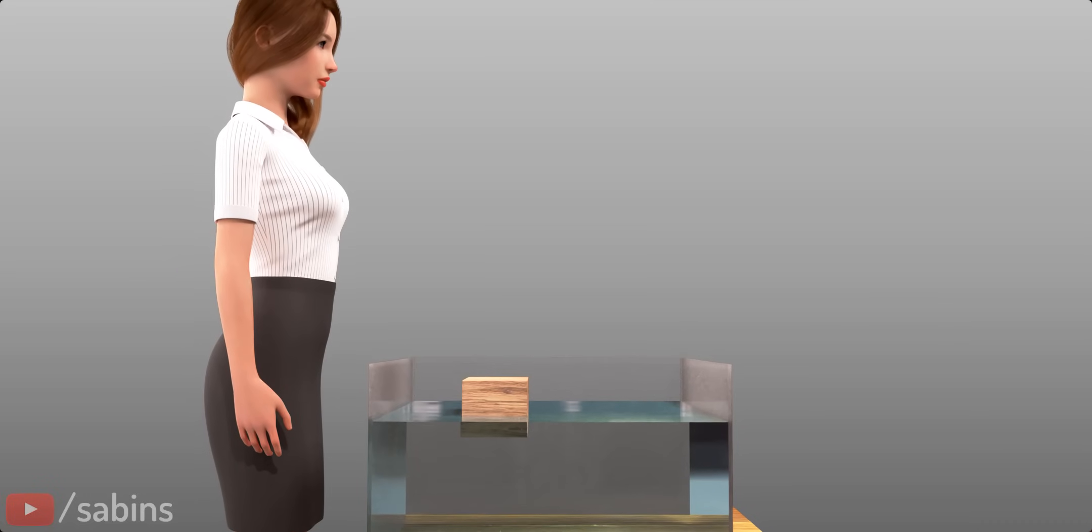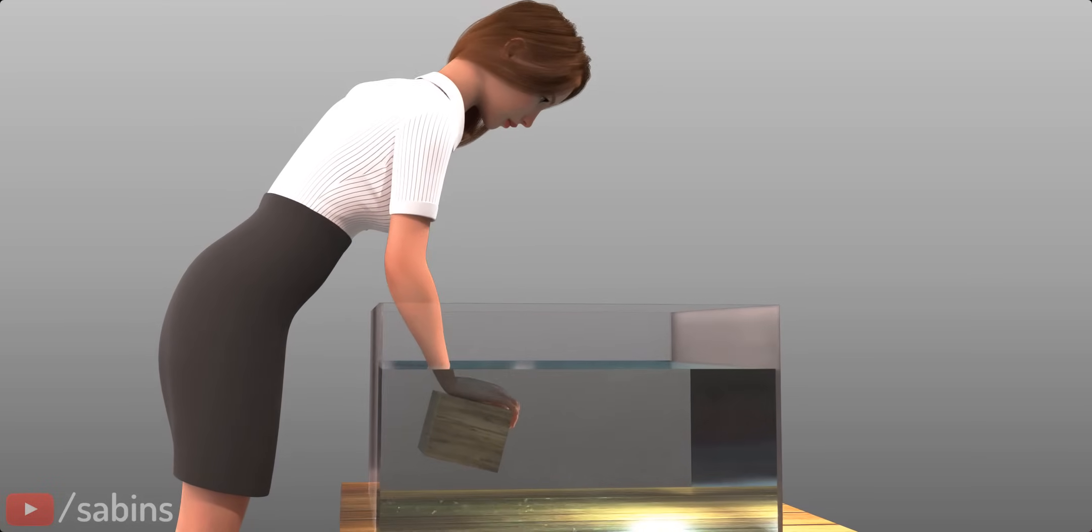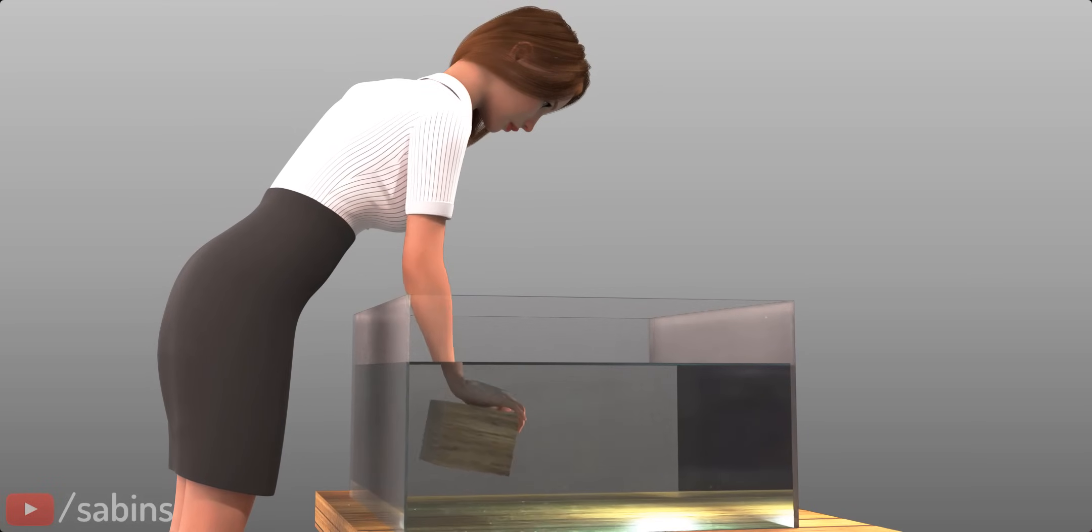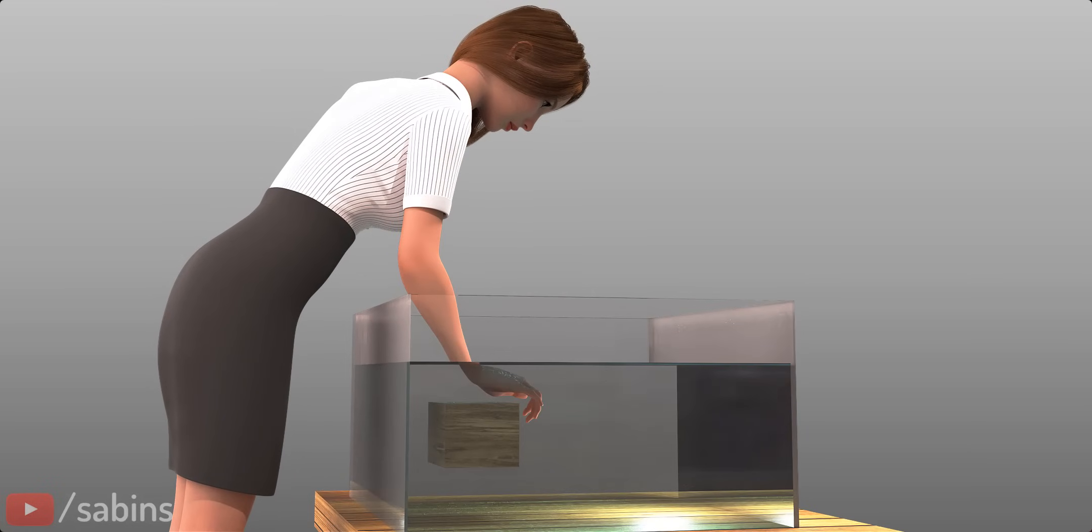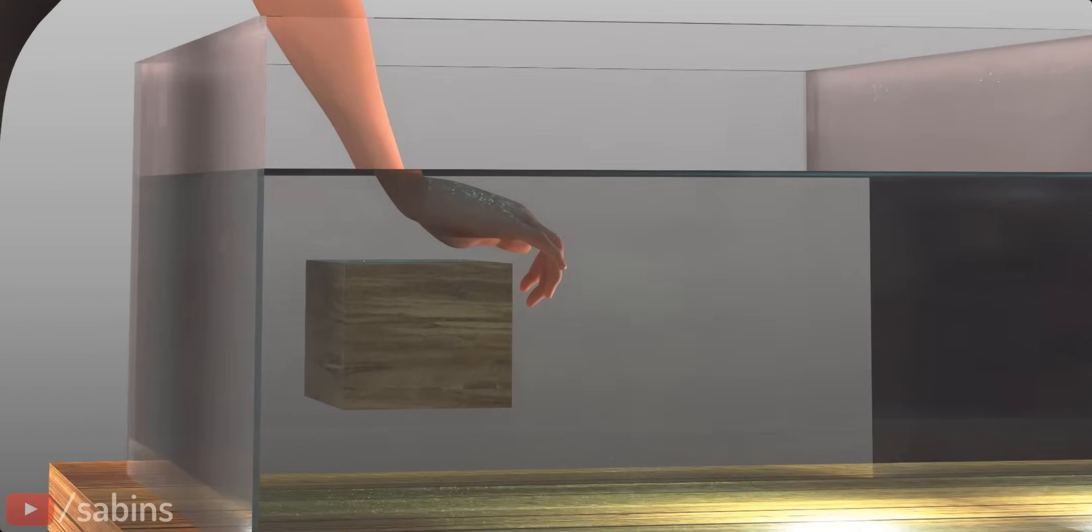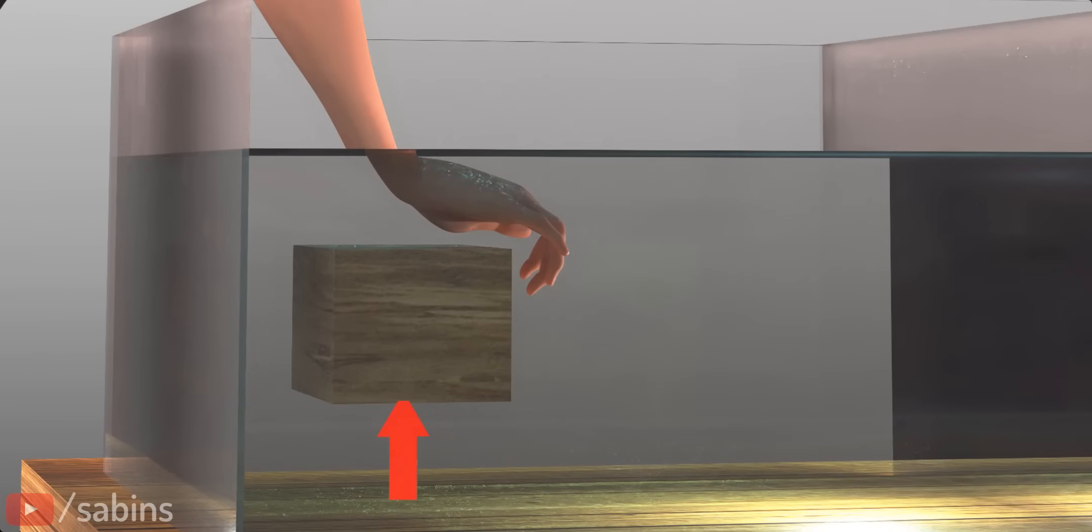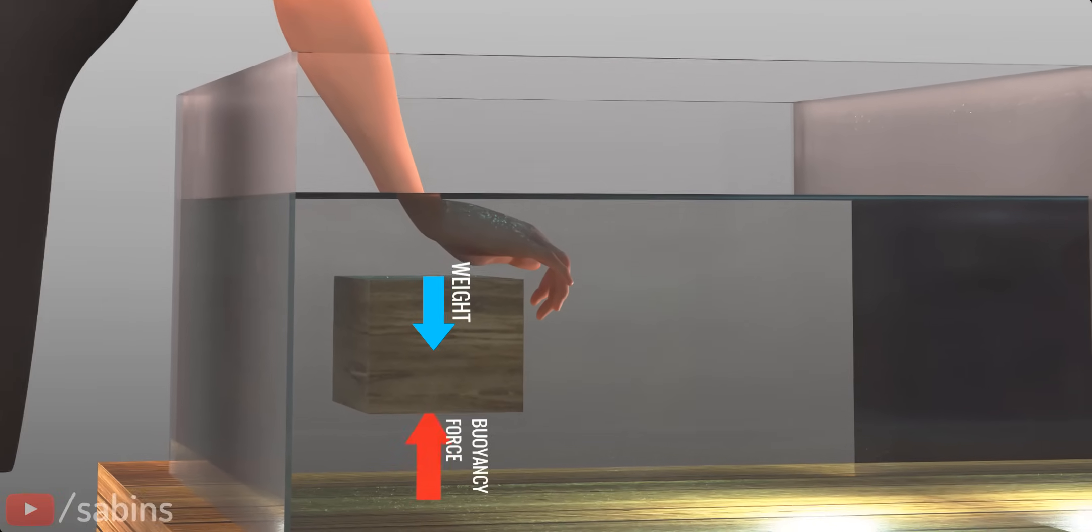Why can't the wood block stay under the water, where you left it? Let's freeze here and analyze the block at the exact moment the woman releases it. The block can't stay in place because the surrounding fluid exerts a force on the wood block, which is more than its weight. This force is known as buoyancy force.